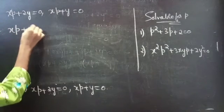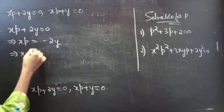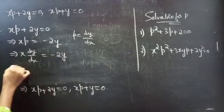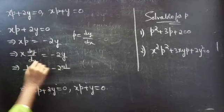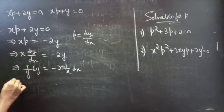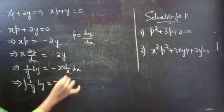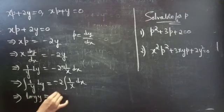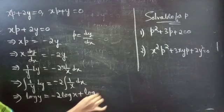Consider the first factor: xp plus 2y equals to 0, so xp equals to minus 2y. Substituting p equals dy/dx gives x times dy/dx equals to minus 2y. Rearranging, (1/y) dy equals to minus 2 times (1/x) dx. The variables are separable, so we perform integration: the integral of (1/y) dy equals to minus 2 times the integral of (1/x) dx.